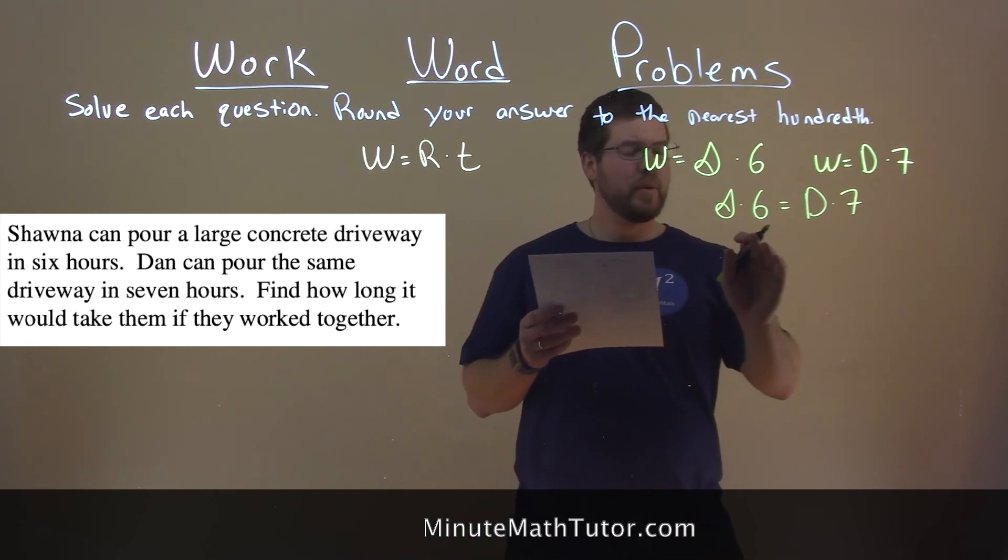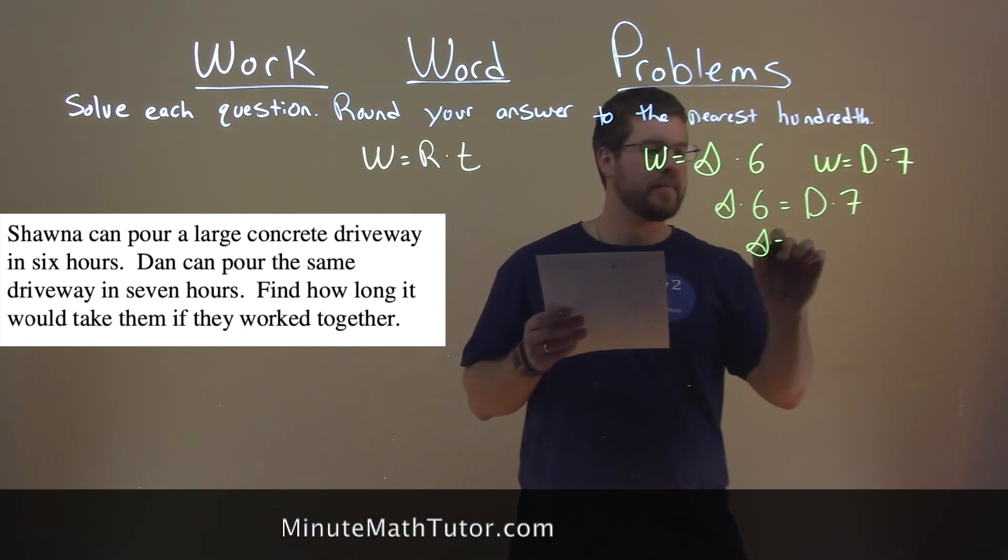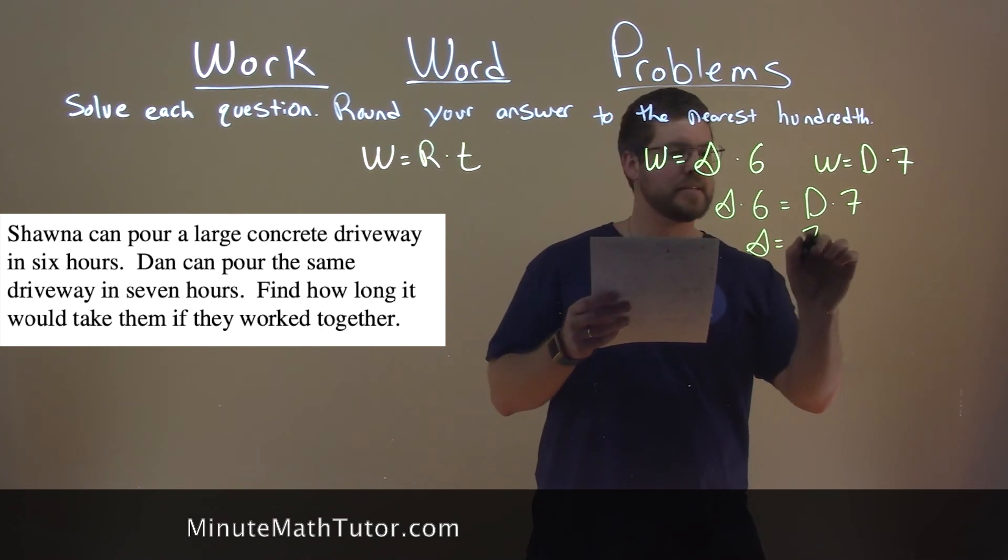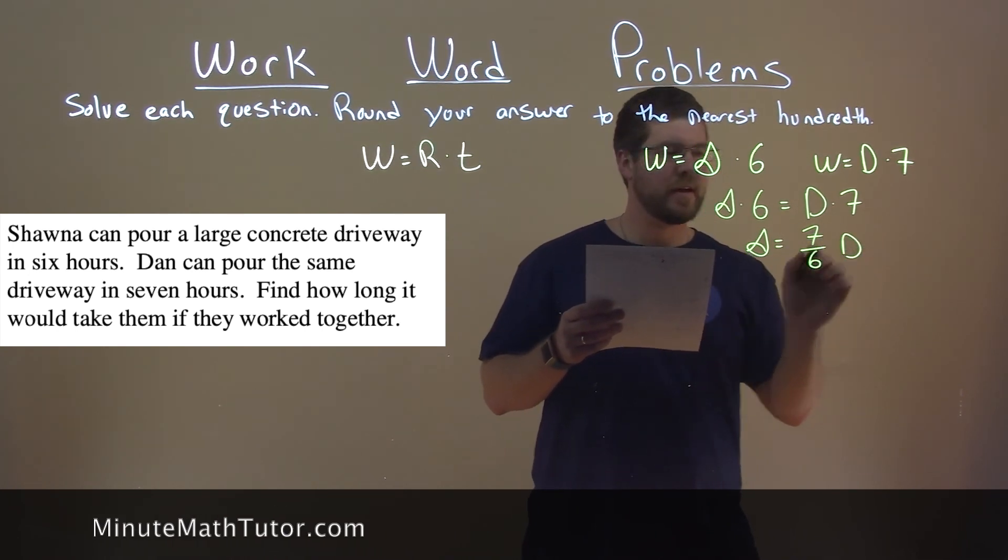Then, from here, we want to get S by itself. Divide both sides by six and S equals seven-sixths times D.